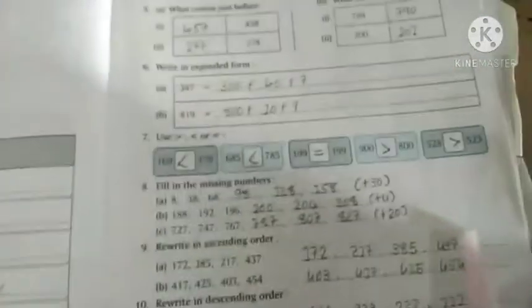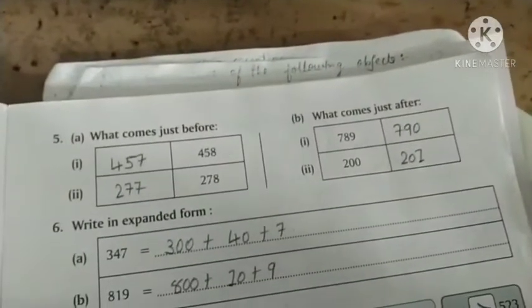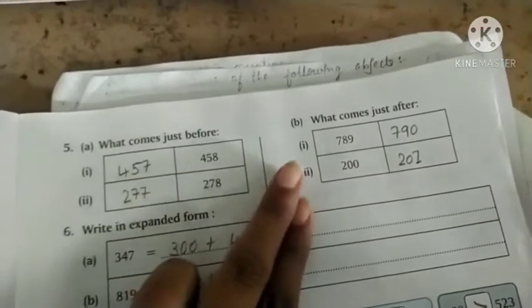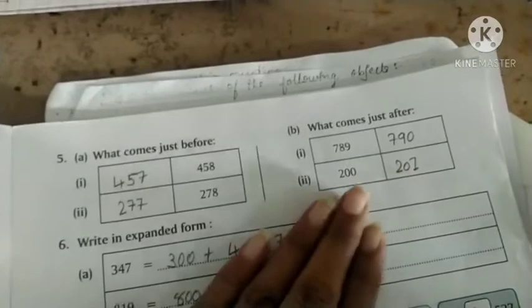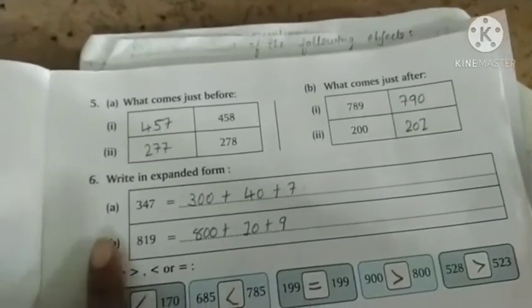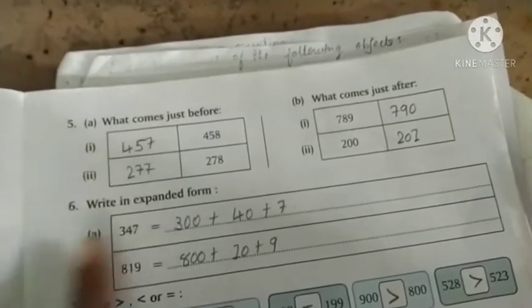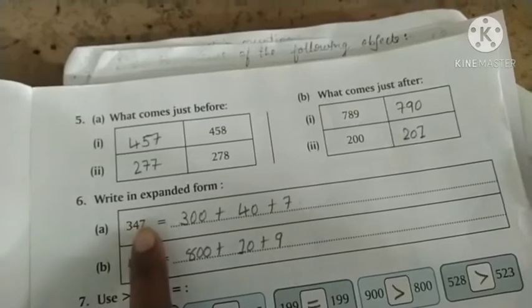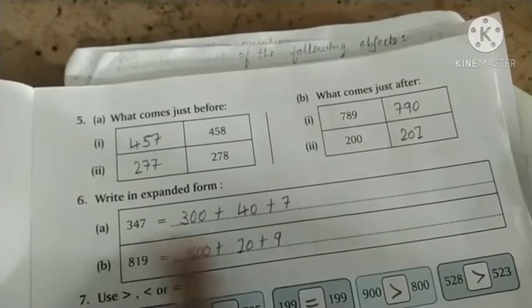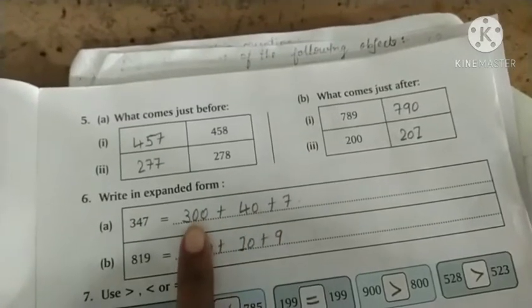Question 5, what comes before and after. For 457, before is 456 and after is 458. For 789, after is 790. For 200, after is 201. Question 6, write in expanded form. For 347, it's 300 plus 40 plus 7. For 819, it's 800 plus 10 plus 9.